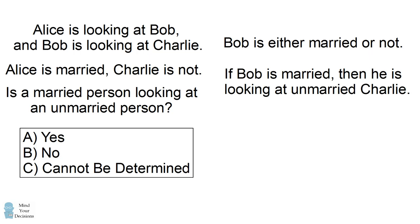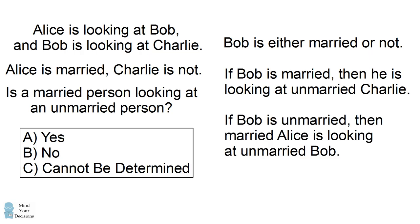What would happen if Bob is not married? In that case, Alice, who is married, is looking at Bob, who is unmarried. So in this case too, it would be true that a married person is looking at an unmarried person. So the correct answer choice is A, yes. Although we don't know which married person is looking at an unmarried person, we know that some married person is looking at an unmarried person.